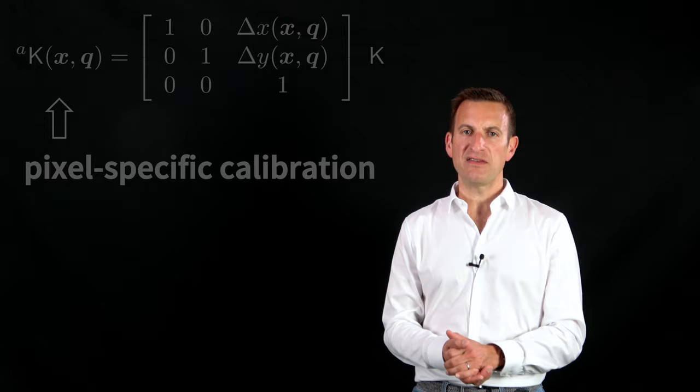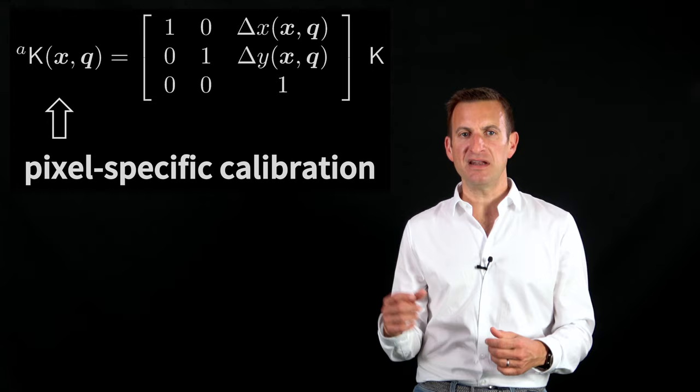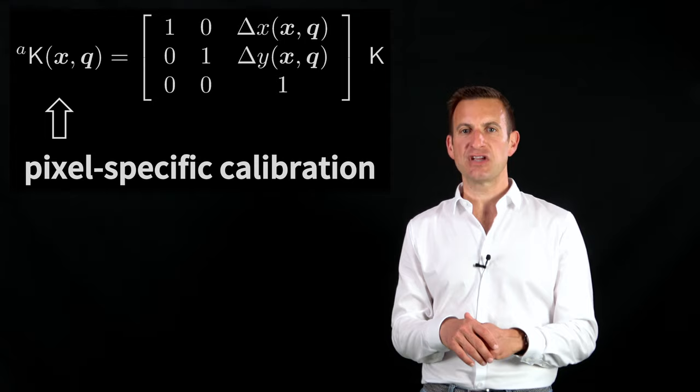In the most general form, this leads basically to a correction for every single pixel. So every single pixel may have an individual correction how the coordinate of that pixel should be shifted a little bit in the x and y direction in my image plane in order to provide a perfect geometric mapping.